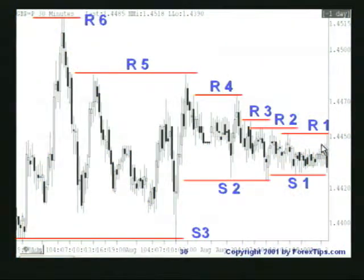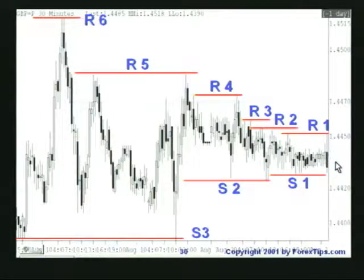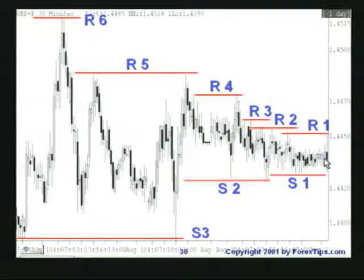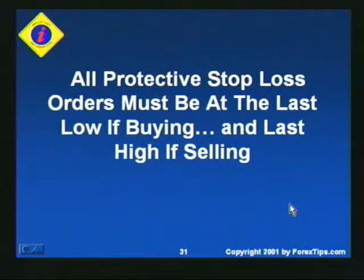The goal is to pull up a chart, have your eyes scan all the levels of resistance and support, and recall the financial game between the bulls and the bears. Bulls are trying to establish new levels of resistance and take out all the old levels of resistance. Bears are trying to establish new lows and take out all the old levels of support. All protective stop-loss orders must be at the last low if you're buying, and at the last high if you're selling.